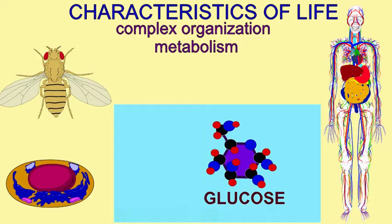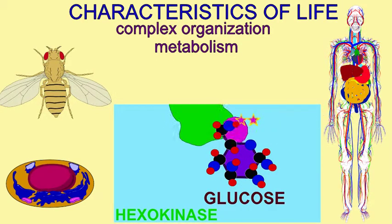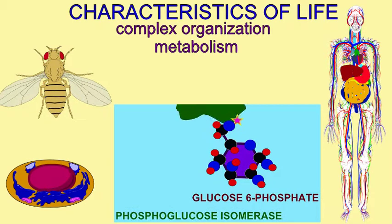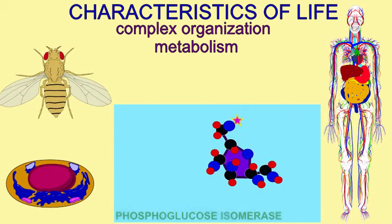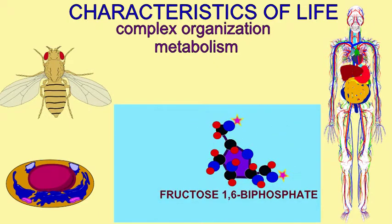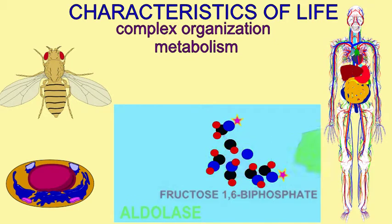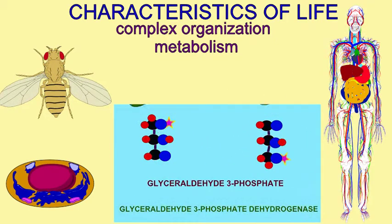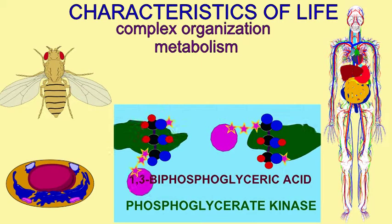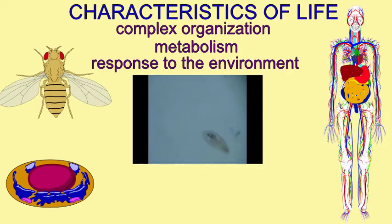All living things perform a variety of chemical reactions. Large molecules can be broken down for energy. Smaller molecules can be assembled into larger ones. Some molecules can be converted to others.